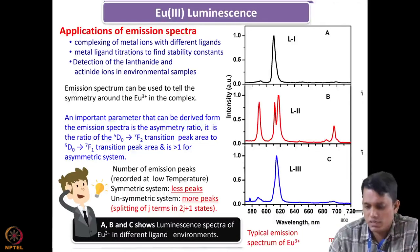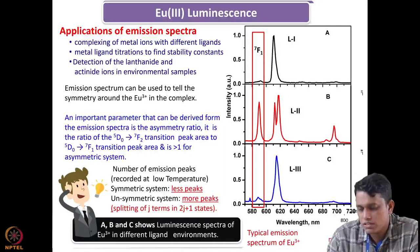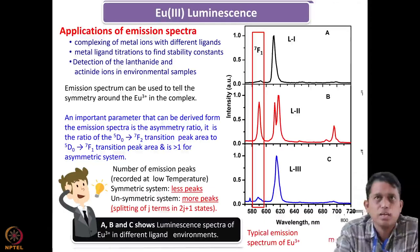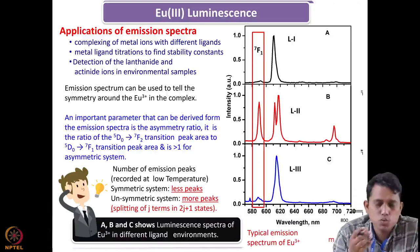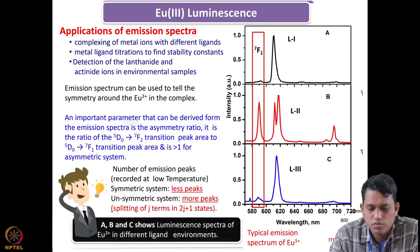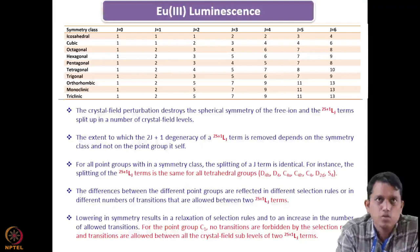Emission spectra can also tell you the exact symmetry around the metal ion, as I will show in the next slide. As I mentioned, certain peaks are magnetic dipole — specifically 5D0→7F1 — and the rest are electric dipole. If you take the ratio of the magnetic dipole transition intensity to the electric dipole transition intensity, you get what is called the asymmetry ratio. This asymmetry ratio is very important for understanding the symmetry around the europium ion. The ratio is very high when symmetry is very low, and low when symmetry is higher. In water, where symmetry is high, this ratio is around 0.5 to 0.6.